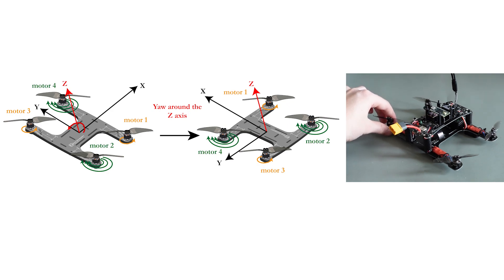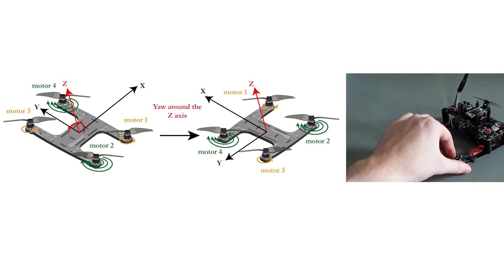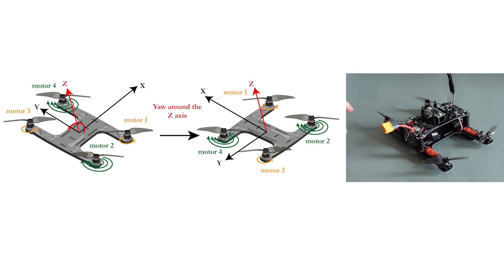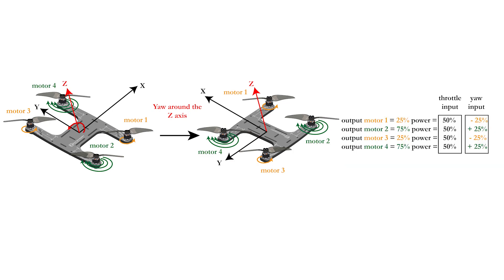When the motors spin in clockwise direction, you will get a counter-clockwise torque on the frame. Therefore, to do a yaw turn, you should reduce the power of motors 1 and 3 and increase the power on motors 2 and 4.